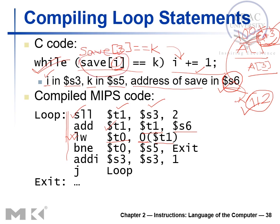Now we have the value of save[i] and need to check whether it equals k or not. As we discussed, when we have an equality check we start with not-equal: we compare the result and if not equal we branch. We then add 1 to i using the ADDI instruction. Once that executes, we jump back to the loop label with J loop, so execution continues as long as the loop condition holds.